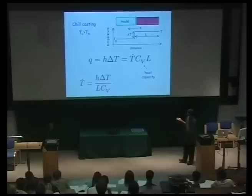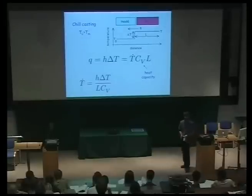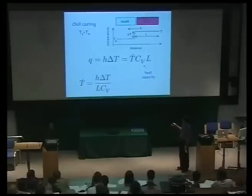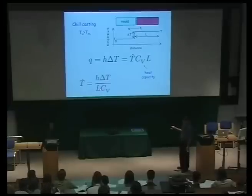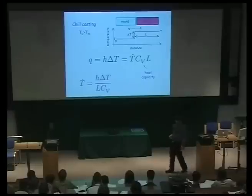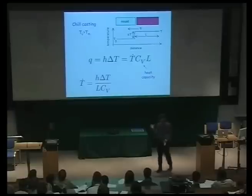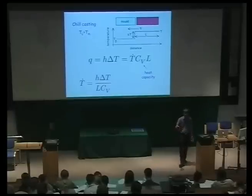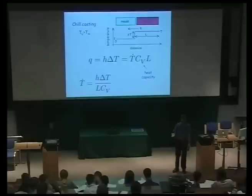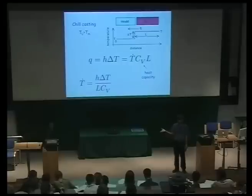So until the material reaches its melting temperature, the cooling rate of the liquid is simply given by a rearrangement of this equation: we have the heat transfer coefficient, the temperature gap, the volume of the material, and the heat capacity of the material. Straightforward calculation of the heat flow rate given by the heat capacity of the liquid times the cooling rate times its volume.